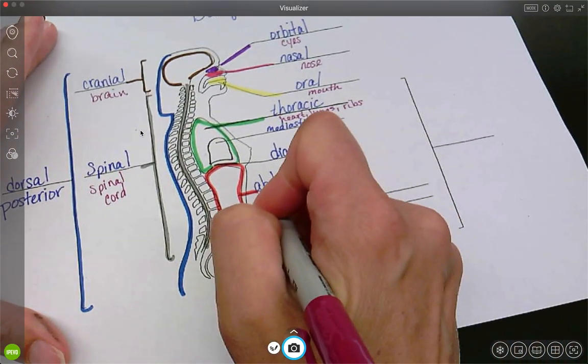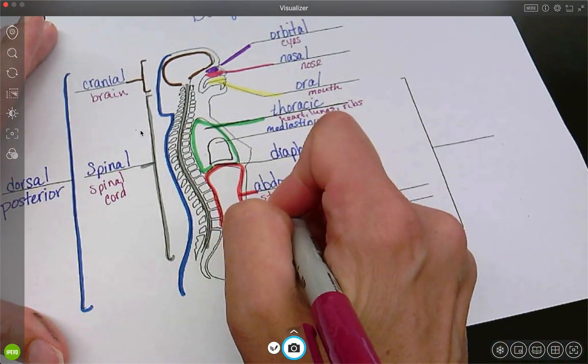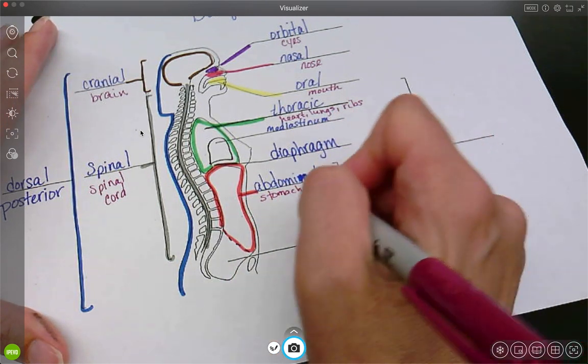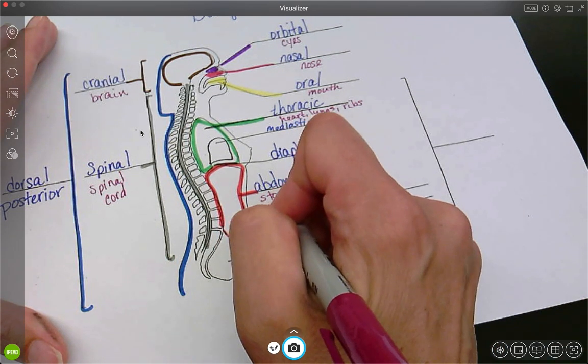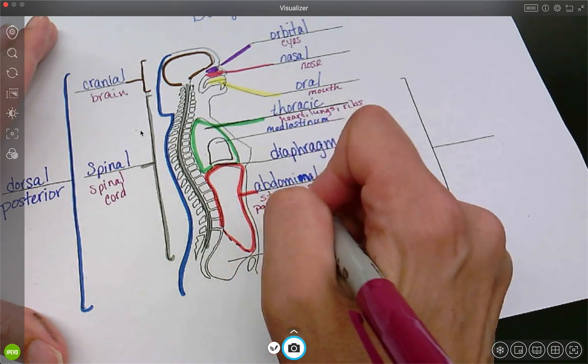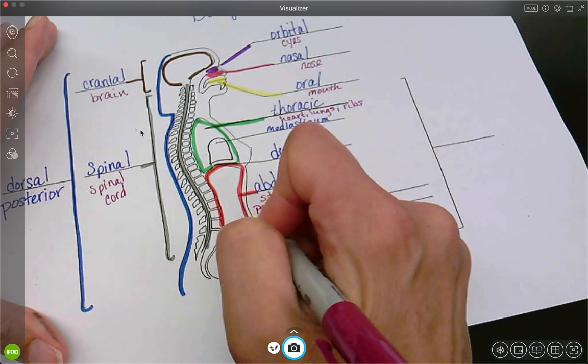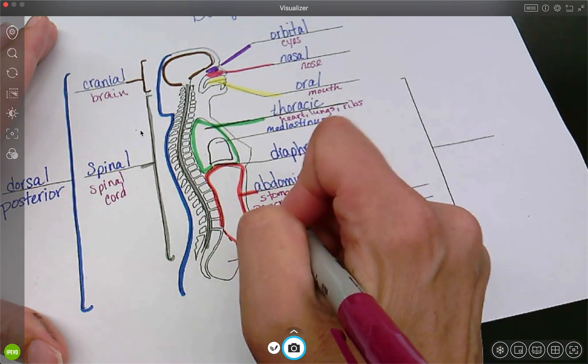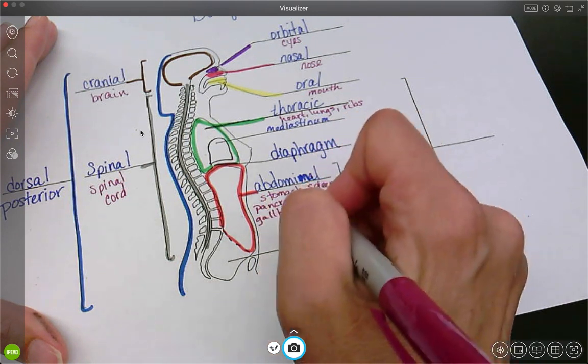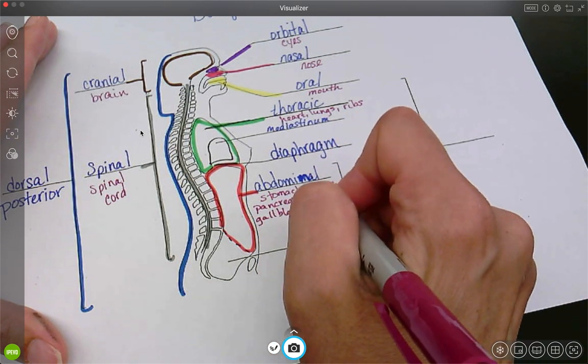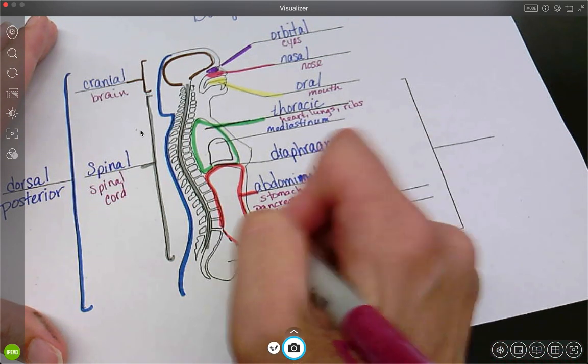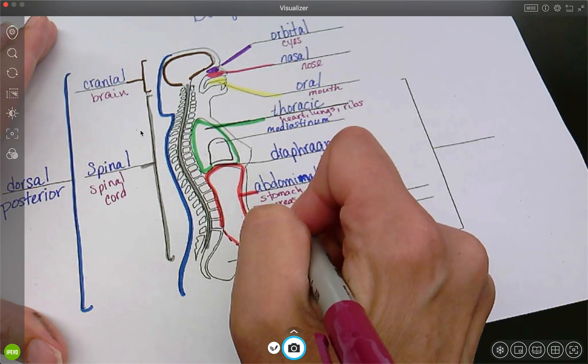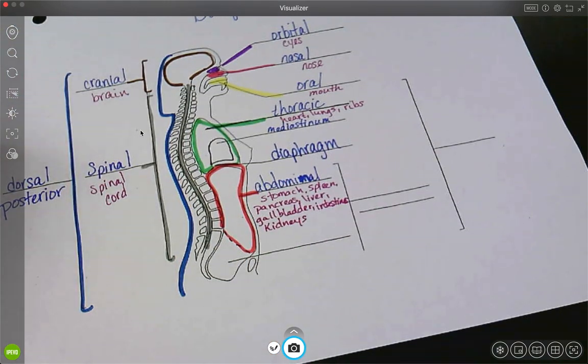So some big organs are going to be the stomach, the spleen, pancreas, liver, gallbladder, intestines, kidneys. Those are going to be the big ones in that area.